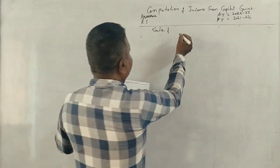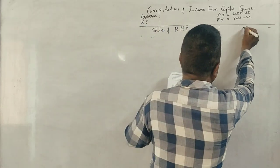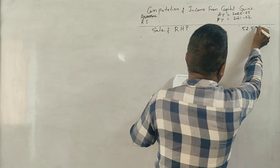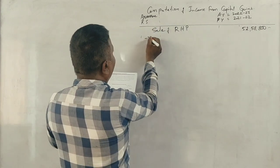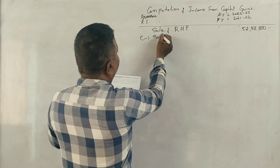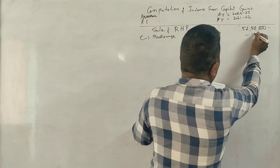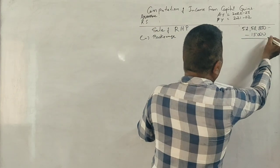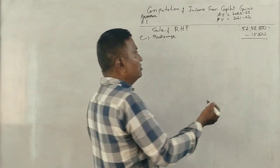This is a sale of residential house property for Rs. 52,58,800. There is brokerage of Rs. 15,000. So we minus the brokerage from the sale price to get the net sale consideration.